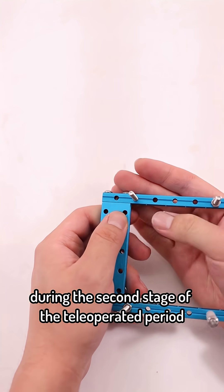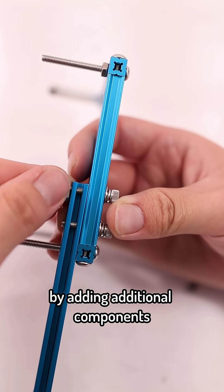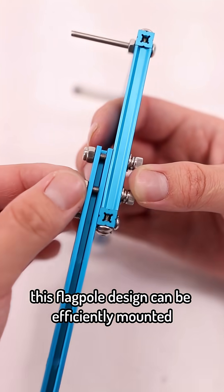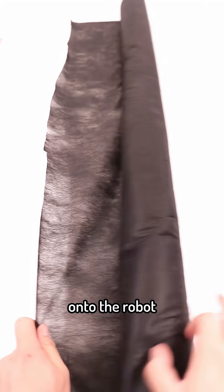During the second stage of the teleoperator period, we can modify the robot by adding additional components. This flagpole design can be efficiently mounted onto the robot.